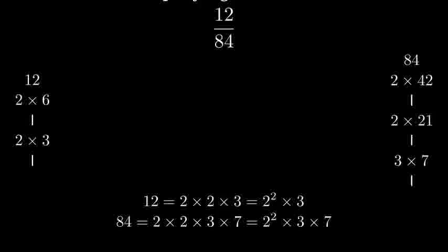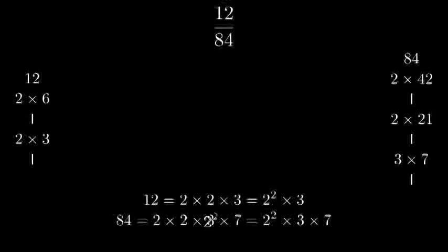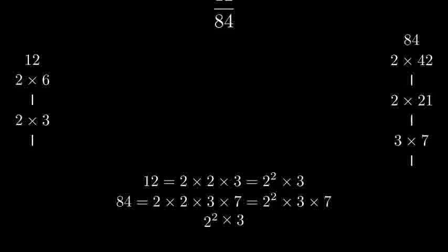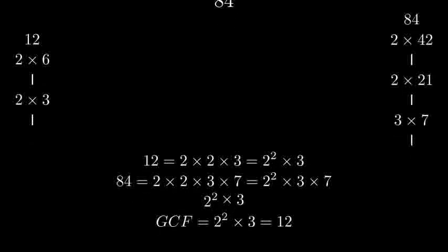We can identify the greatest common factor. Looking at both numbers, we can see they share 2 factors of 2 and 1 factor of 3. So the greatest common factor is 2 squared times 3, which equals 12.